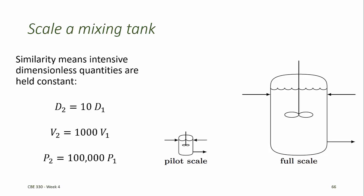Of course, this result may be impractical. If we need a one horsepower motor at the pilot scale, we would need a 100,000 horsepower motor at the full scale. Similarly, if electricity costs one dollar a month at pilot scale, it would cost $100,000 a month at full scale. So clearly we cannot keep the full scale and pilot scale models similar with respect to power consumption. Instead, when scaling up, we may need to redesign the mixer — perhaps use a different mixing rate, or instead of increasing volume by 1,000 for a single tank, use several smaller tanks in parallel.